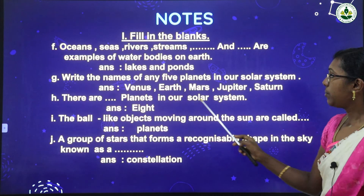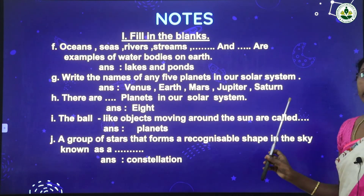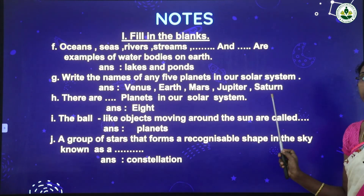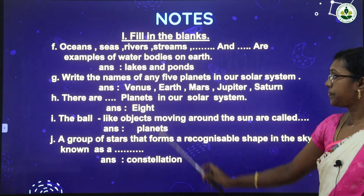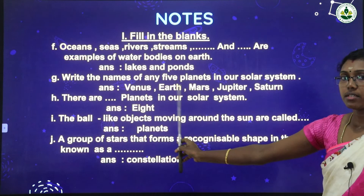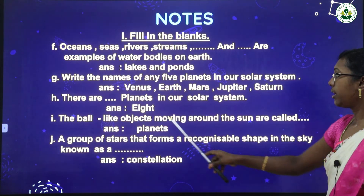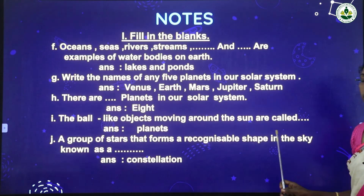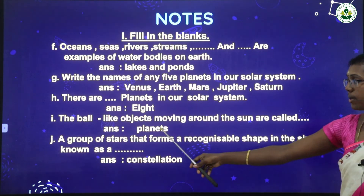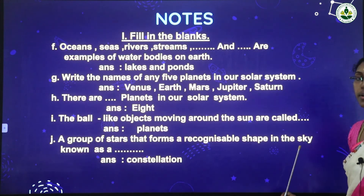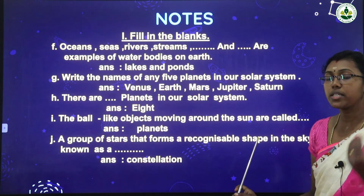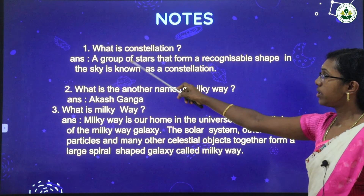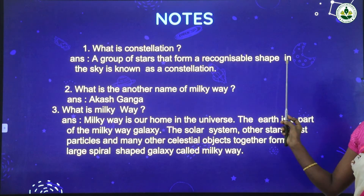Write the names of any five planets in our solar system — for example: Venus, Earth, Mars, Jupiter, and Saturn. There are eight planets in our solar system. A planet is a ball-like object moving around the sun. A constellation is a group of stars that forms a recognizable shape in the sky.